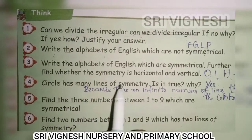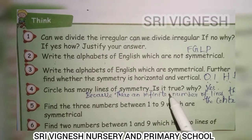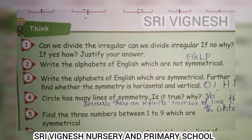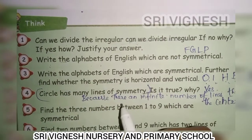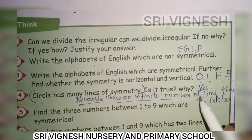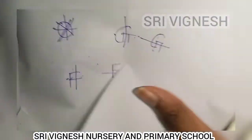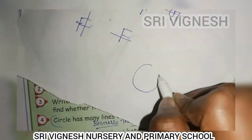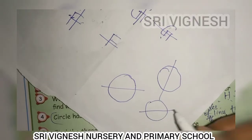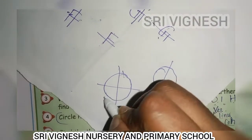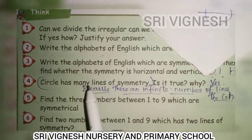Next, circle has many lines of symmetry — is it true? Why? Yes, circle has many lines of symmetry because there are infinite number of lines through the center. For example, if you look at a protractor, there is a circle. The circle can be folded this way, or this way, or this way — the circle has many lines of symmetry.